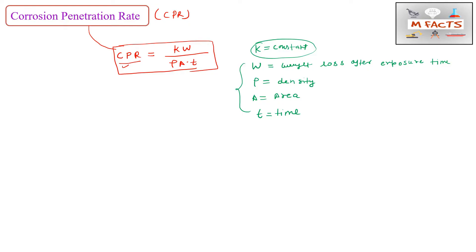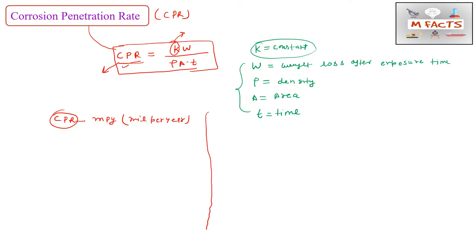This is a very simple calculation, but one important thing to remember is that the constant k has different values depending on the units of CPR. CPR may be calculated in two units: mils per year (mpy), or mm per year. Note that one mil equals 0.001 inches, so mils per year is essentially an inch-based unit.